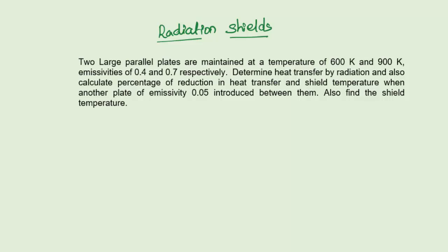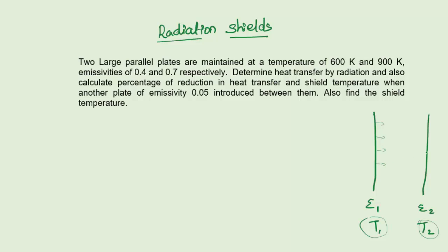Hello everyone, welcome back. In this video we are going to see what is meant by radiation shield and we will solve some problems on radiation shields. Now, consider two surfaces: this surface having emissivity epsilon 1 and this is epsilon 2. This surface temperature is T1 and this is T2. Now if T1 is greater than T2, T1 will exchange heat from here to the second surface.